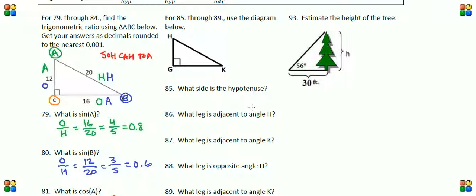Looks like they're just asking us to go over what we already used in questions 79 through 84. Question 85 is asking which side is the hypotenuse. Well, the hypotenuse is always either the longest side, you could also call it the side that's across from the right angle, or